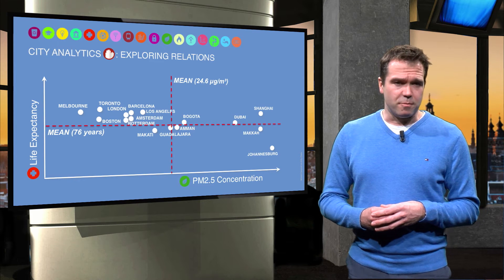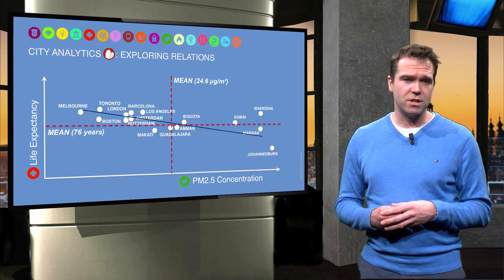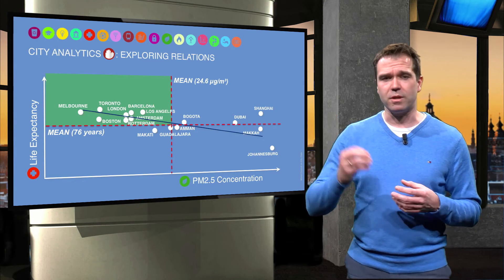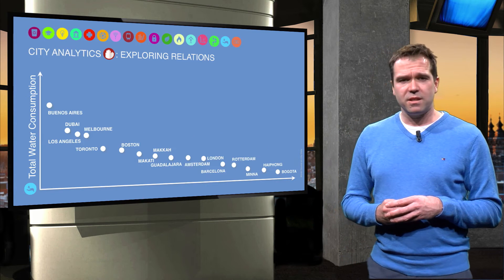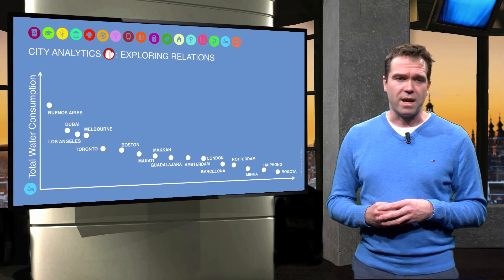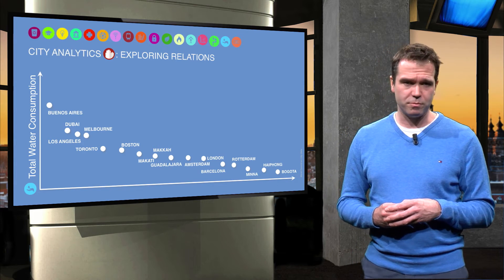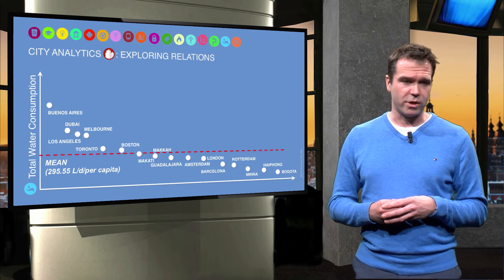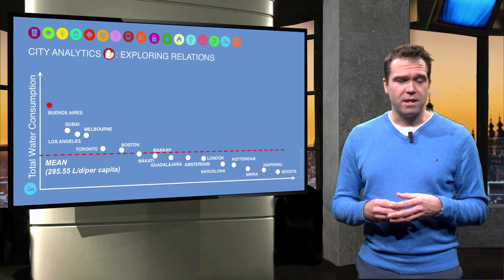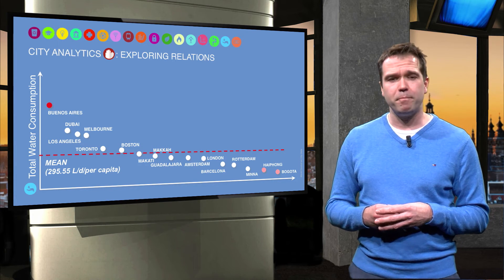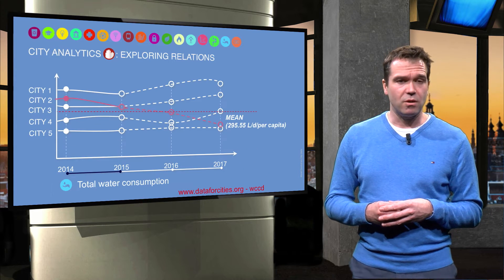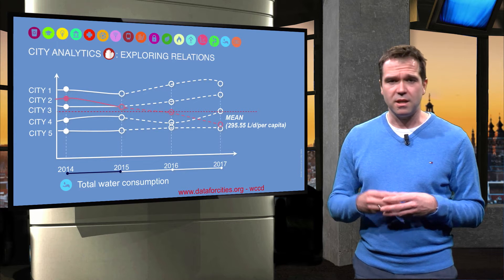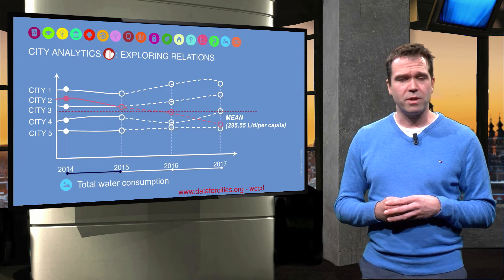City analytics challenges cities to showcase new developments or measure real scores. Cities in the lower right corner can for instance learn from cities in the upper left corner. Another example of city analytics is the use of city data over time. This graph shows the water use per capita per day. It might be interesting to study differences between Buenos Aires, with the highest use, and for instance Bogota or Haiphong in Vietnam. Cities can learn from each other — contact policy leaders and ask how they reach the targets.